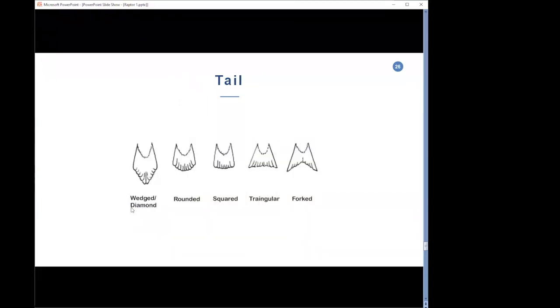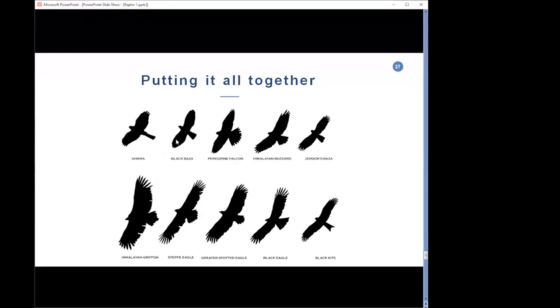Then we get to the tail. Tails are quite distinctive. You have the wedge or diamond shape as in the lammergeier or in the imperial eagle. A rounded tail is quite a few raptors. Squared, triangular in the booted eagle, forked in the kite. So the tail shape along with the wing shape are a very good indicator of what they are. Also, as with the shape of the tail, the length of the tail is also very important. So when you see the shape of the tail, you also need to make a note of the length of the tail. Because in quite a few groups of the birds, where the shape of the tail is the same, the length of the tail often defines which species it is.